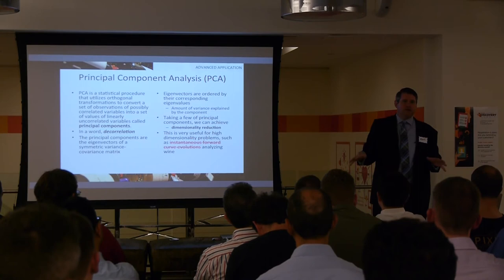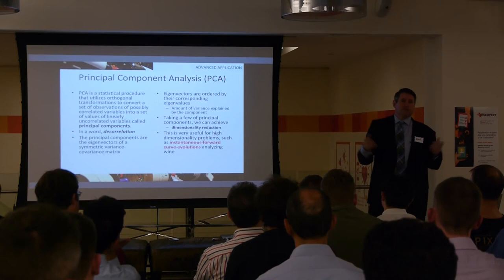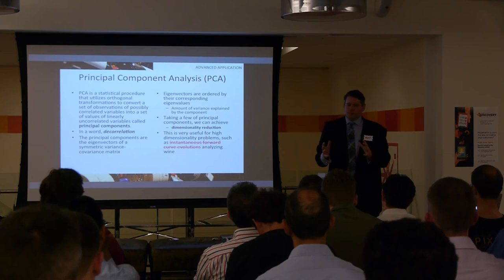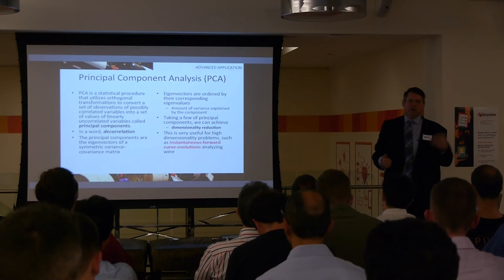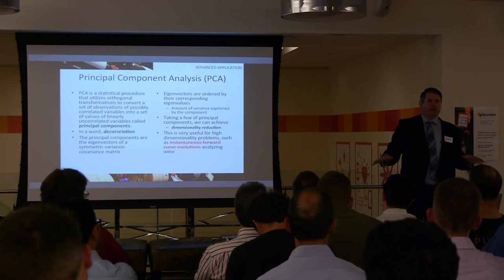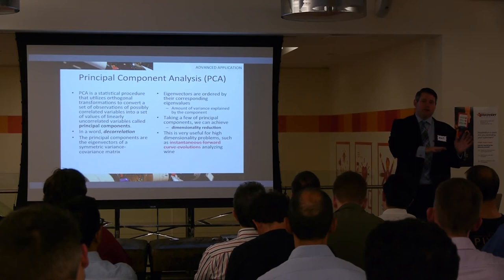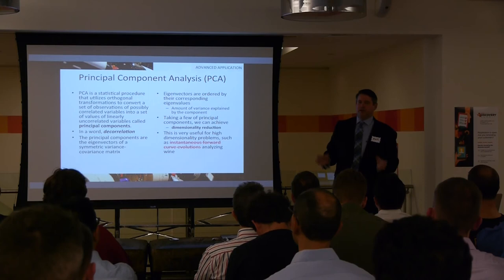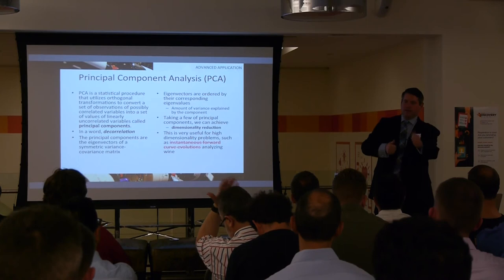If you reduce to two dimensions you can plot it on paper; three dimensions and you can visualize it in 3D space. PCA takes correlated data — like GDP in Ireland being correlated with GDP in England — and performs decorrelation. There may be some underlying latent variable affecting both. PCA creates new axes that may come out at any angle to the original axes but capture the most amount of variation.